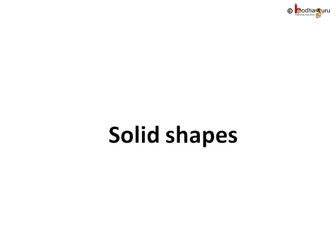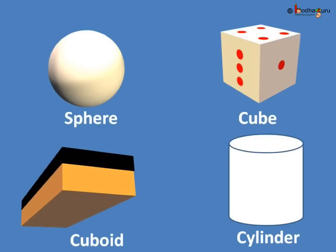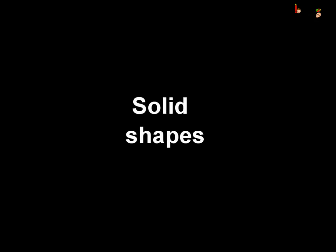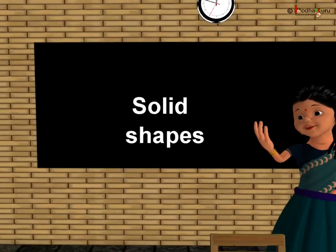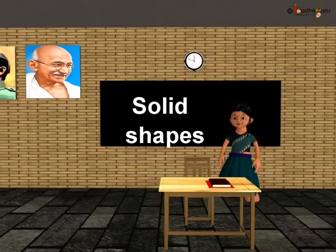So now you know different solid shapes like sphere, cube, cuboid, cylinder, etc. We shall discuss more about them in the next class. That's all for now. Bye-bye children.